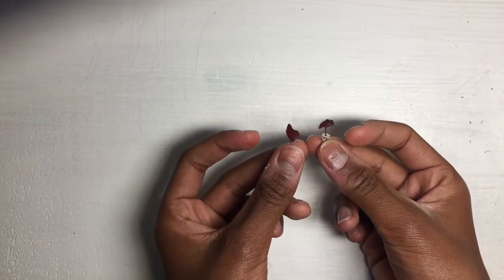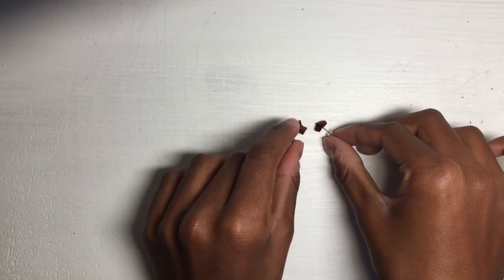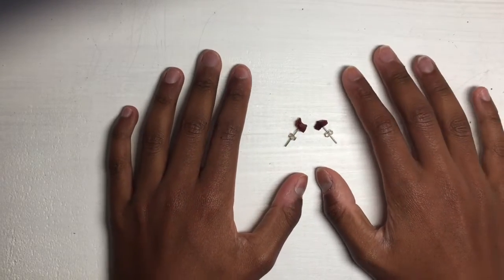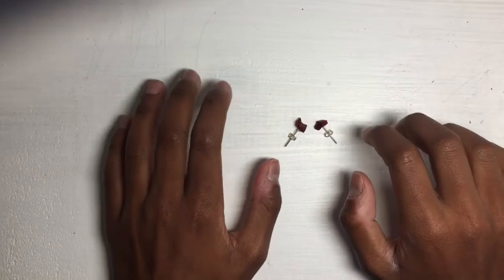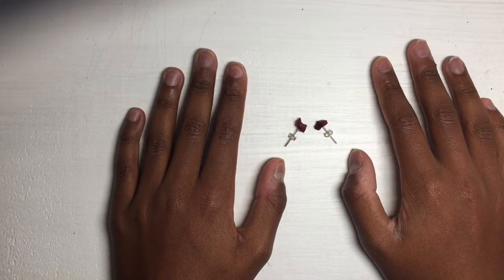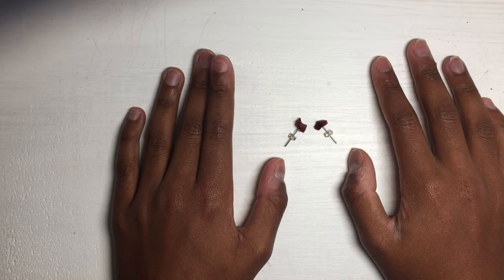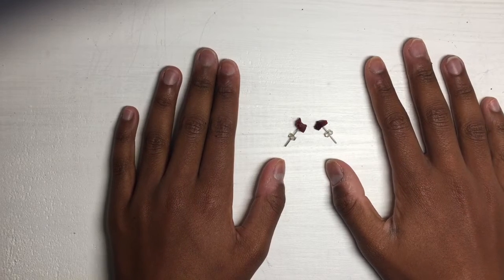And there you have it. Two blood-red eucalyptus sap earrings. Thank you for watching this video to the end. Don't forget to like, comment, and subscribe to my channel. It would be a great help, and I would really appreciate it. Thanks again for watching, and I'll see you next time.